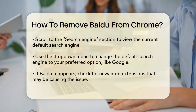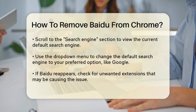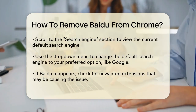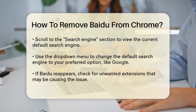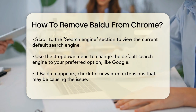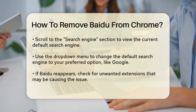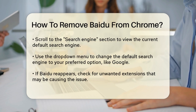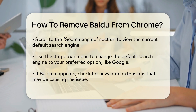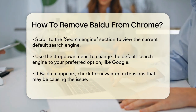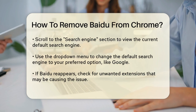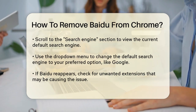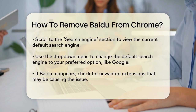Click on the three vertical dots in the upper right corner of the Chrome window to open the menu. From this menu, select Settings. In the Settings page, scroll down to the Search Engine section. Here, you'll see the current default search engine, which might be Baidu. Click on the drop-down menu next to Search Engine Used in the address bar, and select your preferred search engine, such as Google.